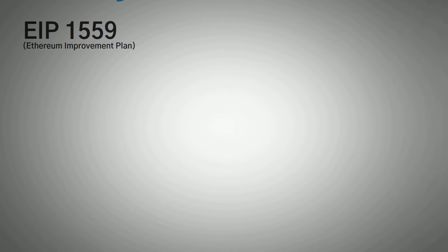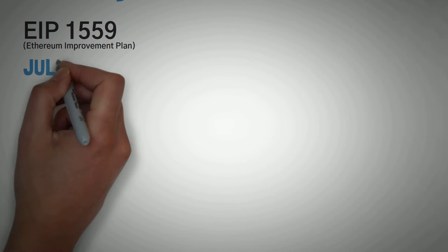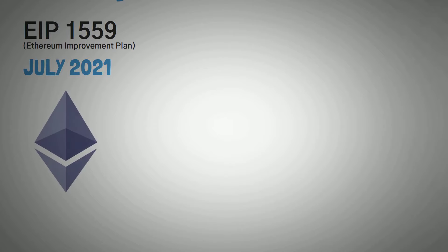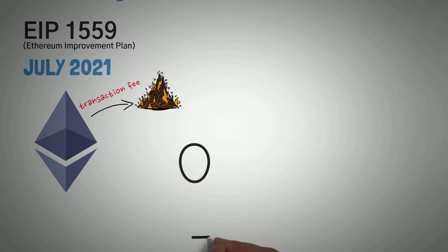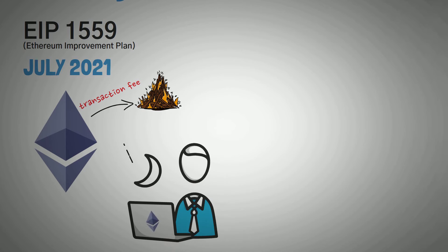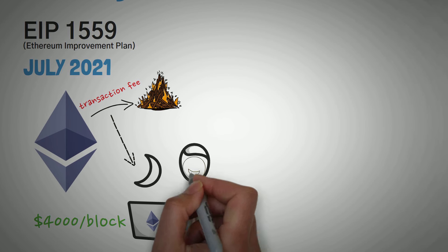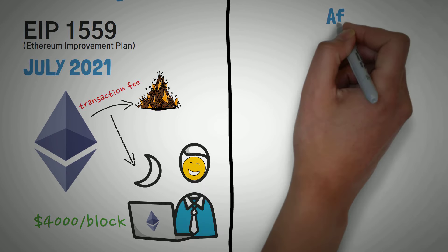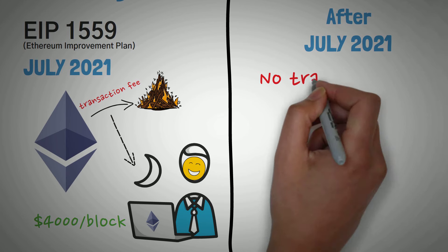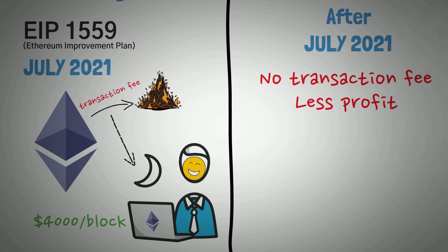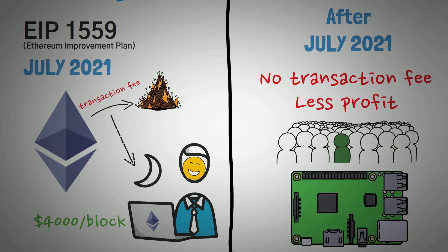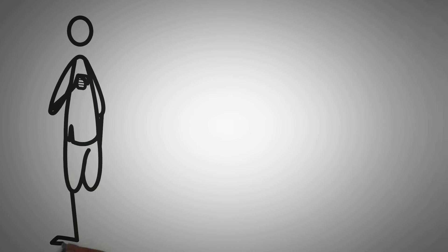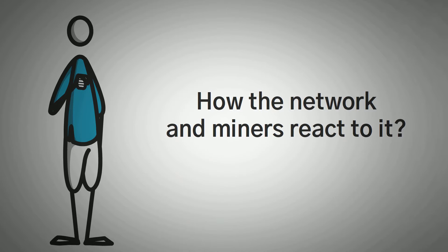Another thing to talk about is EIP-1559 — Ethereum Improvement Plan number 1559 — which was said to go live in July 2021. What it will do is take whatever the transaction fee is and essentially burn it — it'll be gone forever. Right now, while posting this video, miners still get that fee, which can equal up to an extra $4,000 per block, making Ethereum the most profitable coin to mine. However, after July 2021 these fees will be burned and gone forever, which could mean less profitable mining, fewer miners, and also less expensive GPUs due to supply and demand.